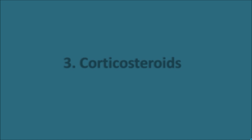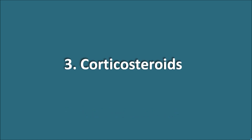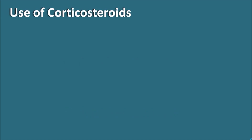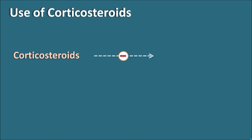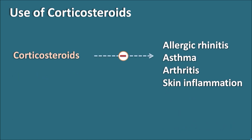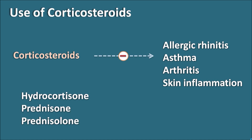The third type of drugs given as nasal sprays are corticosteroids. Corticosteroids can be used in various conditions including allergic rhinitis, asthma, arthritis, and skin inflammation. They are among the most important anti-inflammatory agents. Common corticosteroids include hydrocortisone, prednisone, and prednisolone, but these three are not given by the nasal route.